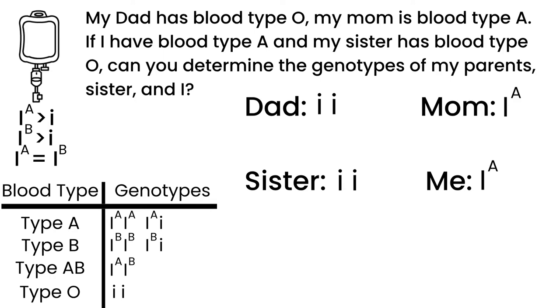My sister had to get a lowercase i from both parents. Therefore, my mom must have that allele. I had to get an allele from my dad and he only has little i alleles to give. So I am also capital I A and lowercase i genotype.